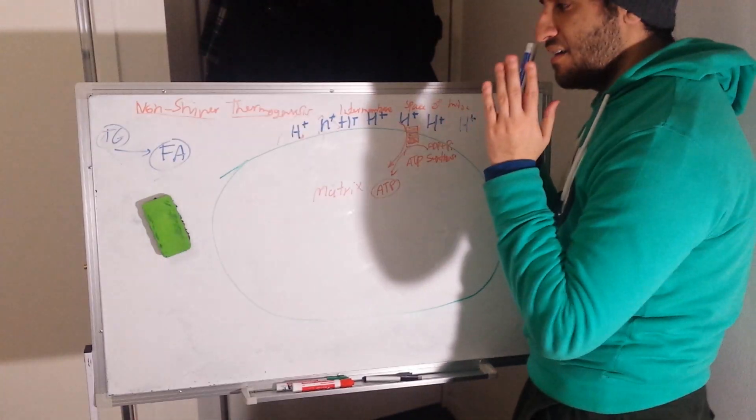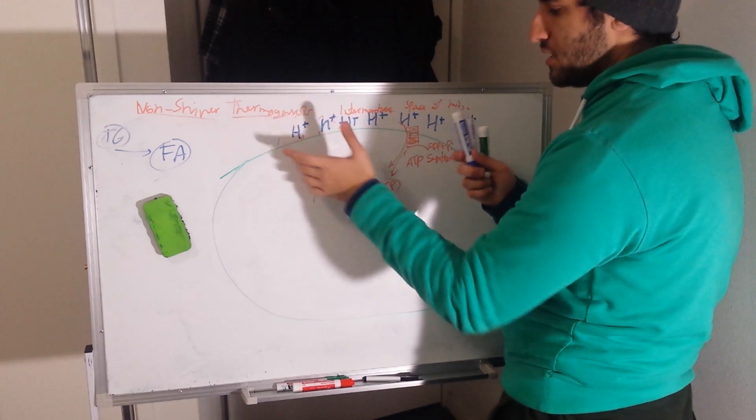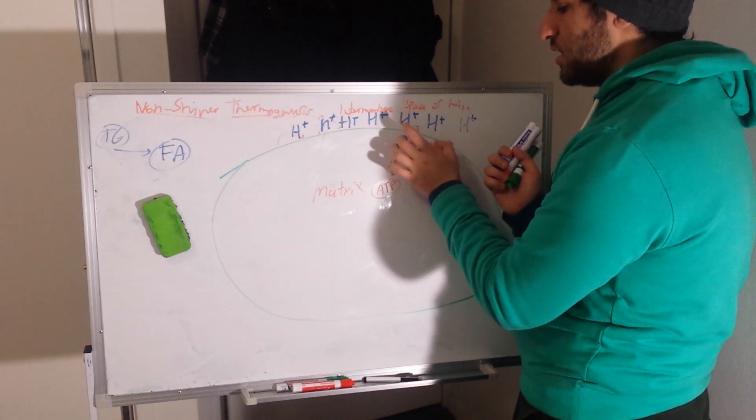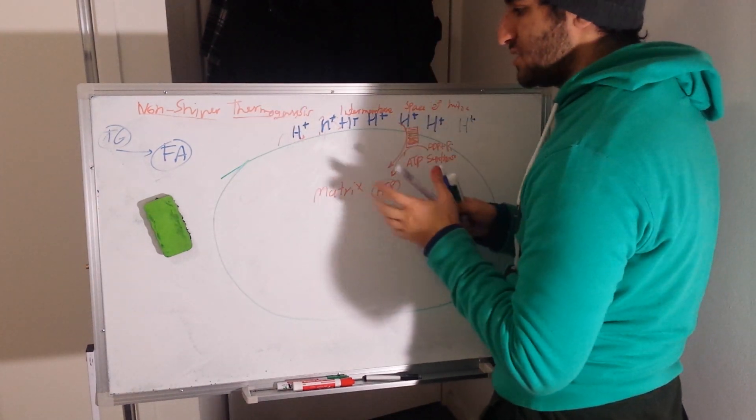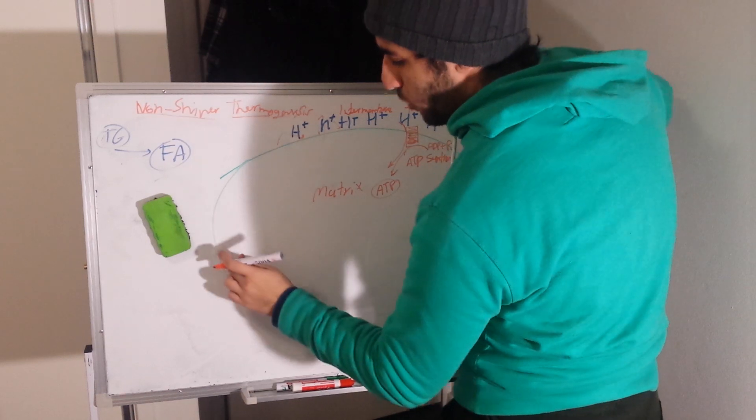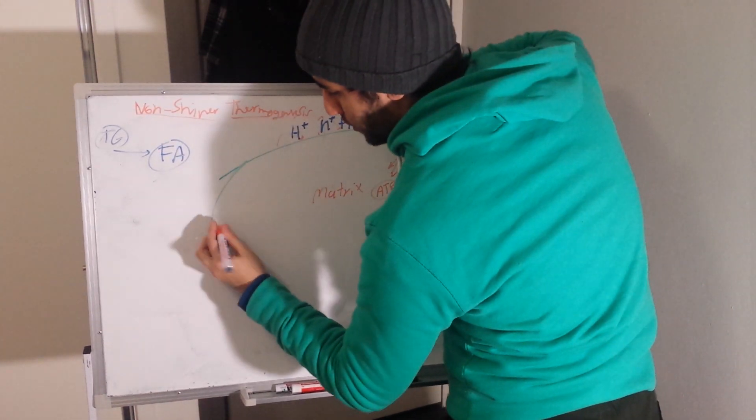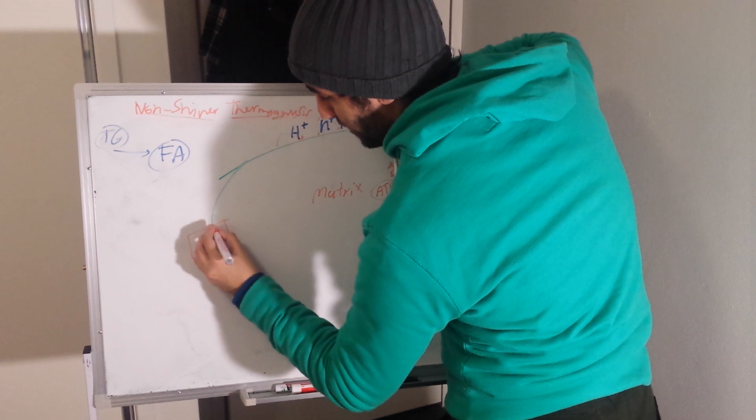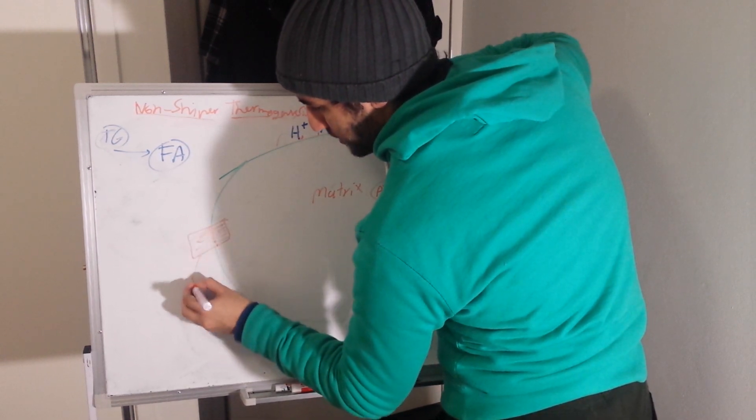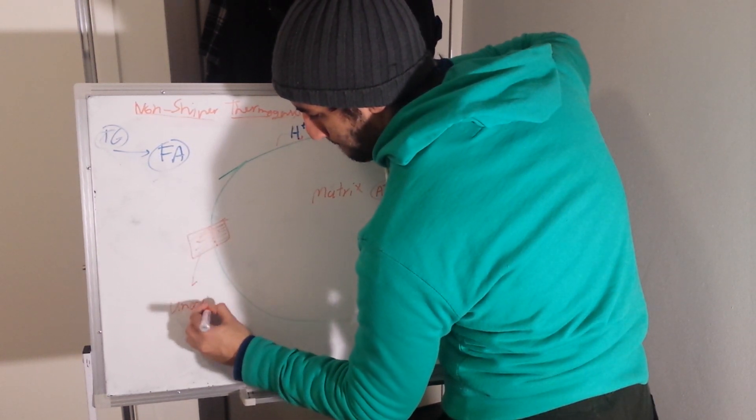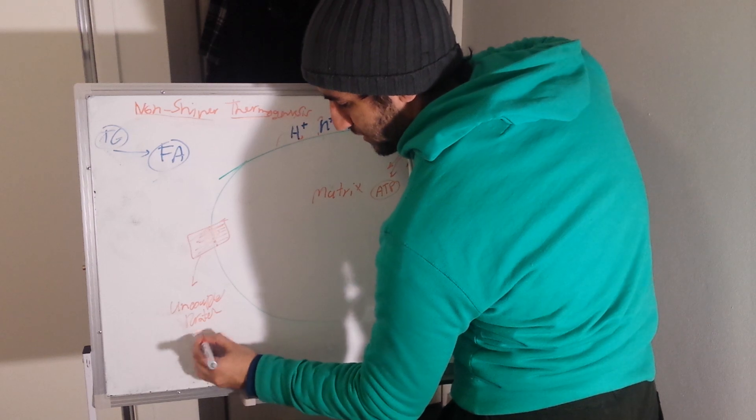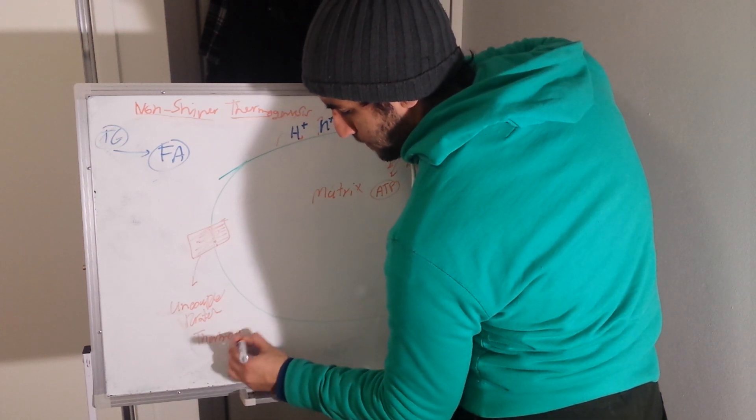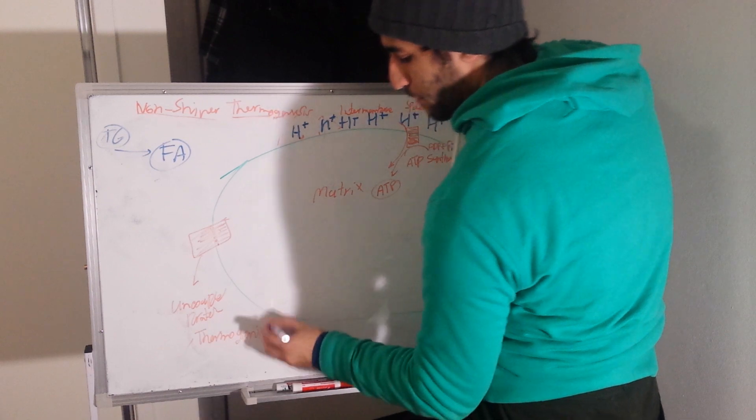But when we talk about fatty acids, we are having a different scenario. So that's one normal scenario. But let's see what happens with fatty acids. Fatty acids would enhance one thing, that hydrogen gradient, because there is not only ATP synthase there. We're going to refer to the second point when I said uncoupled protein. We have another important protein called uncoupled protein.